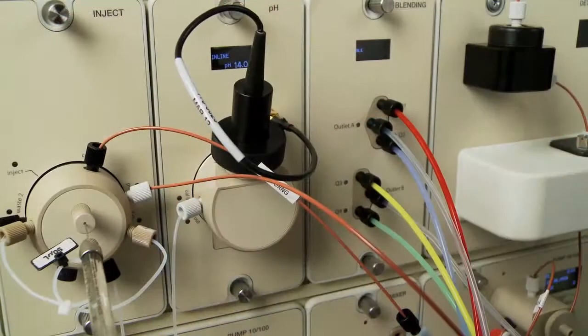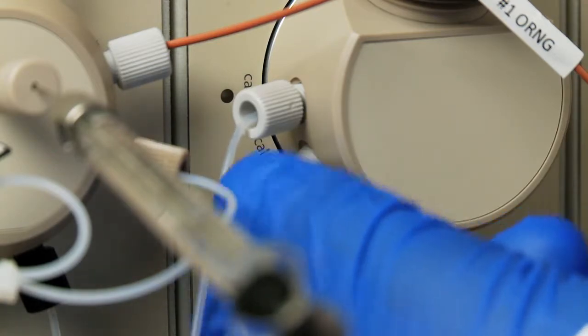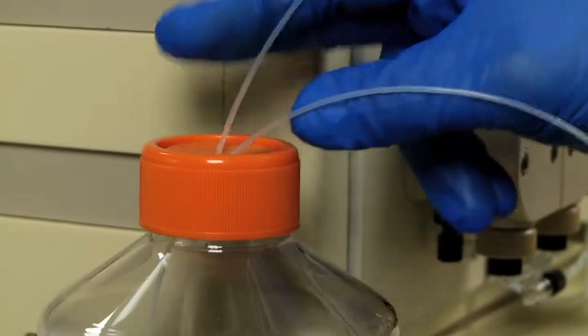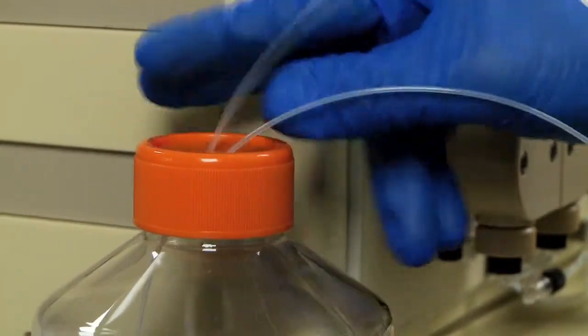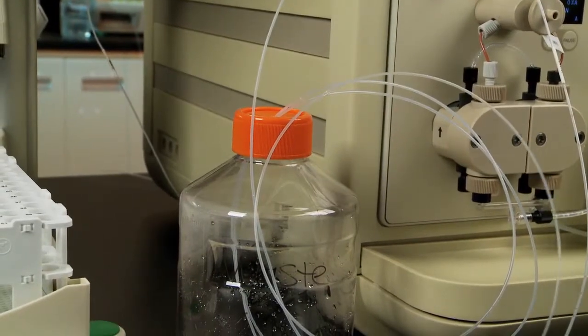Connect the waste tubing to the calibration waste port labeled CAL OUT on the pH valve and immerse the open end into a waste container. The waste container should be placed next to or below the NGC. Do not place the waste container on top of the NGC.